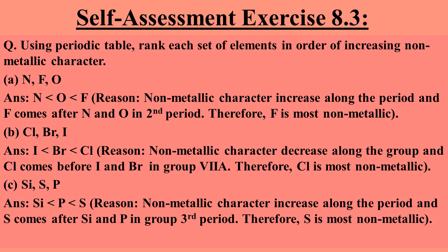Self-assessment exercise 8.3, further question — rank each set in order of increasing nonmetallic character. Part A: from nitrogen, fluorine, and oxygen — nitrogen is least nonmetallic and fluorine is most nonmetallic. Part B: from chlorine, bromine, and iodine — iodine is least nonmetallic and chlorine is most nonmetallic. Part C: from silicon, sulfur, and phosphorus — silicon is least nonmetallic while sulfur is most nonmetallic.